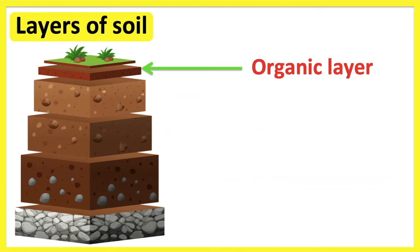The organic layer is also known as the O-horizon. The organic layer is the top layer consisting of plant remains such as leaves, twigs, and other organic material which have decomposed and form humus.